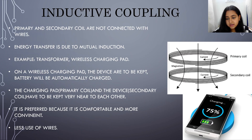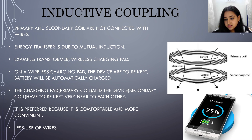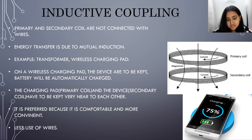Inductive coupling: primary and secondary coils are connected, and energy transfer is due to mutual induction between the two coils. An example is a transformer or a wireless charging pad. As you can see in this image, the phone is kept on the charging pad and is getting charged wirelessly. The charging pad acts as the primary coil and the device as the secondary coil; they must be kept very near to each other for charging to occur. It is preferred because it is comfortable, more convenient, and requires less use of wires.